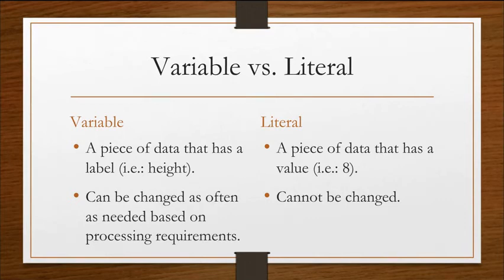Okay, variables versus literals. We've kind of described what a variable is, so let's review. A variable is a piece of data that has a label like height or age or name, and it can be changed as often as needed based on processing requirements. On the other hand, a literal is a piece of data that has a very specific value. For instance, if I write an 8, its value is 8. 8 is always equal to 8. 8 cannot change its value to something else. So it can't be changed.